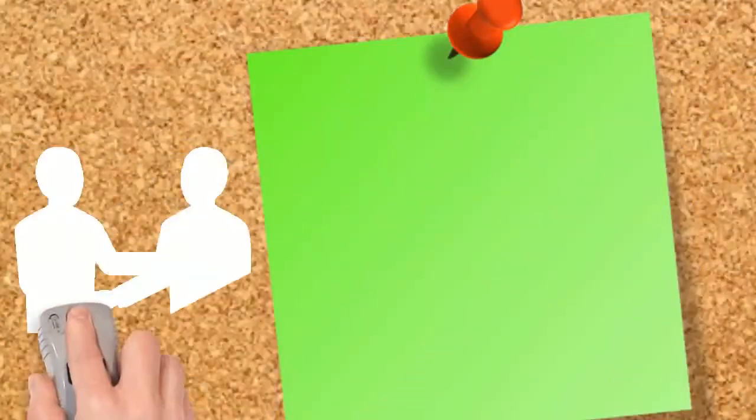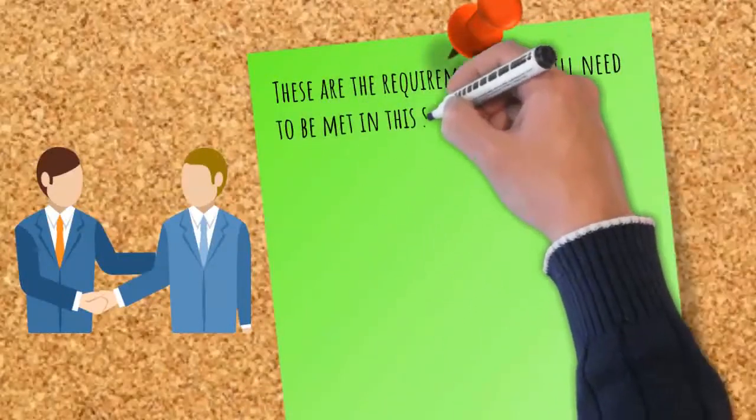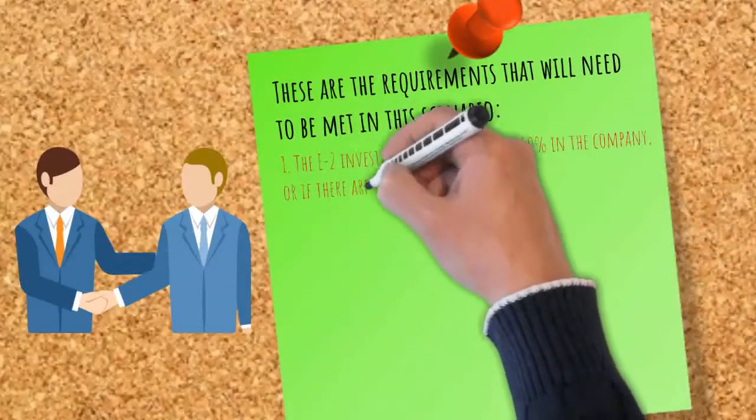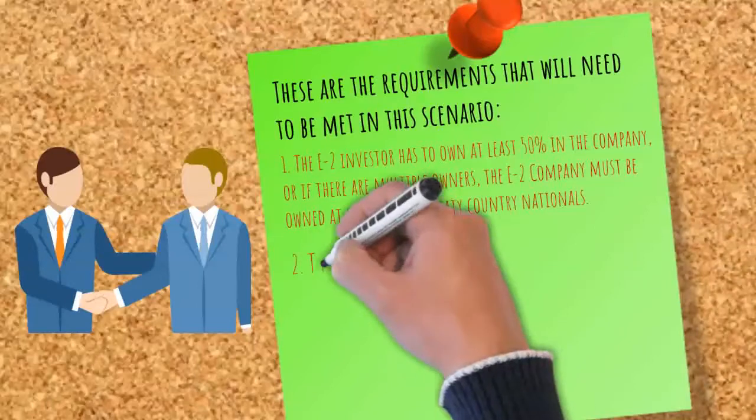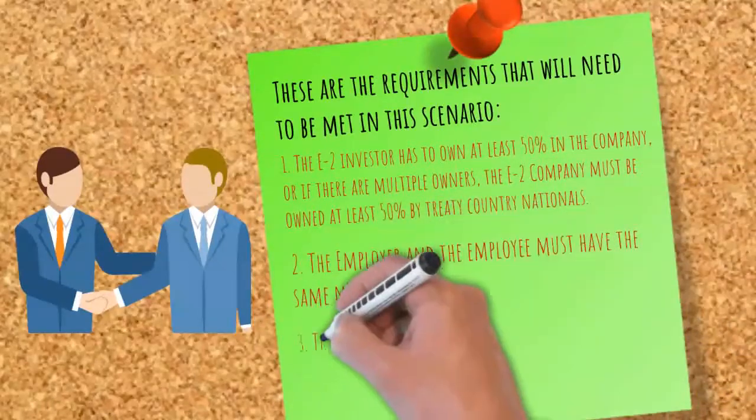These are the requirements that will need to be met in this scenario. The E2 investor has to own at least 50% in the company, or if there are multiple owners, the E2 company must be owned at least 50% by treaty country nationals. Second, the employer and the employee must have the same nationality.